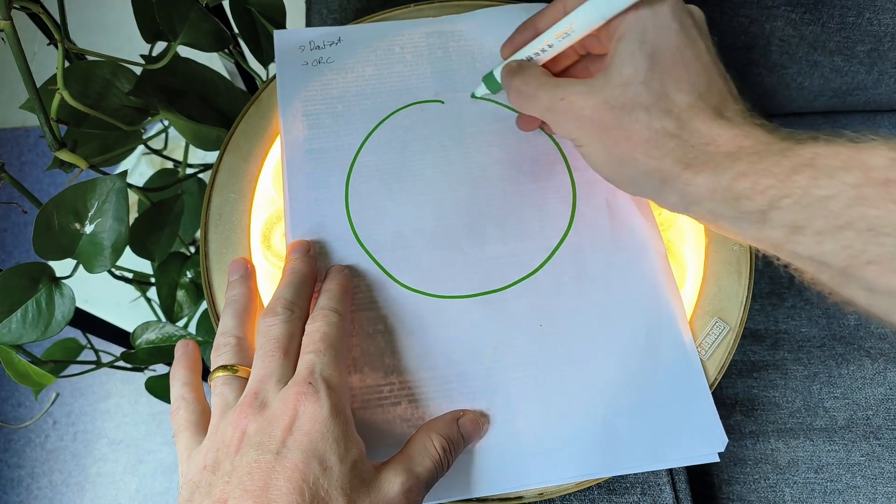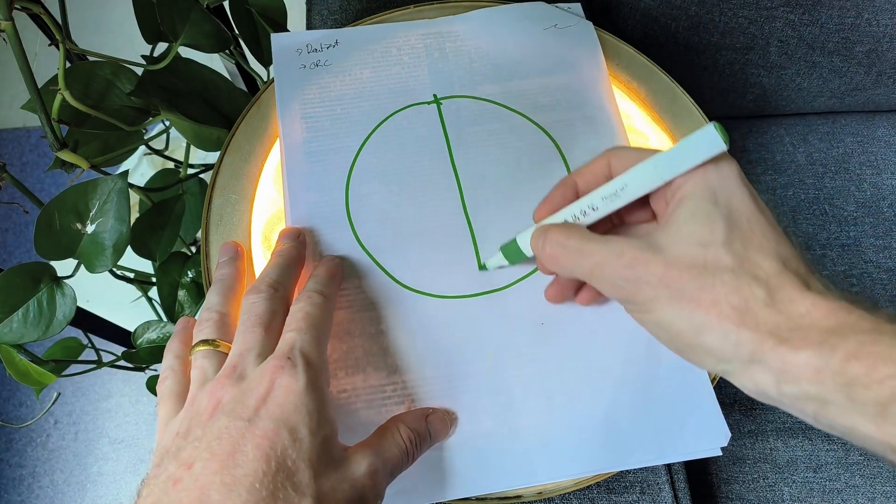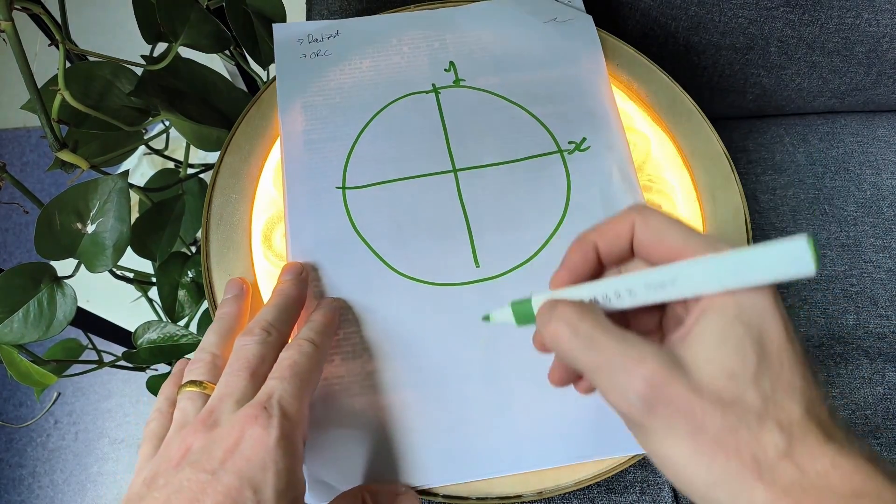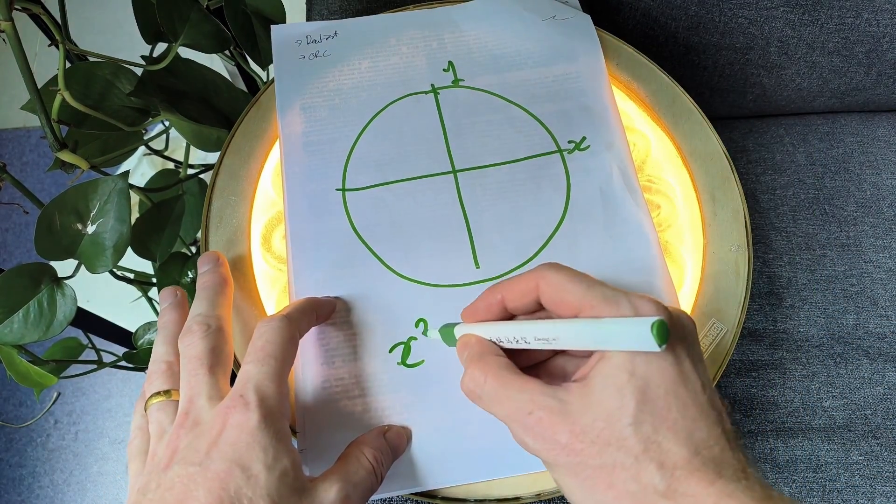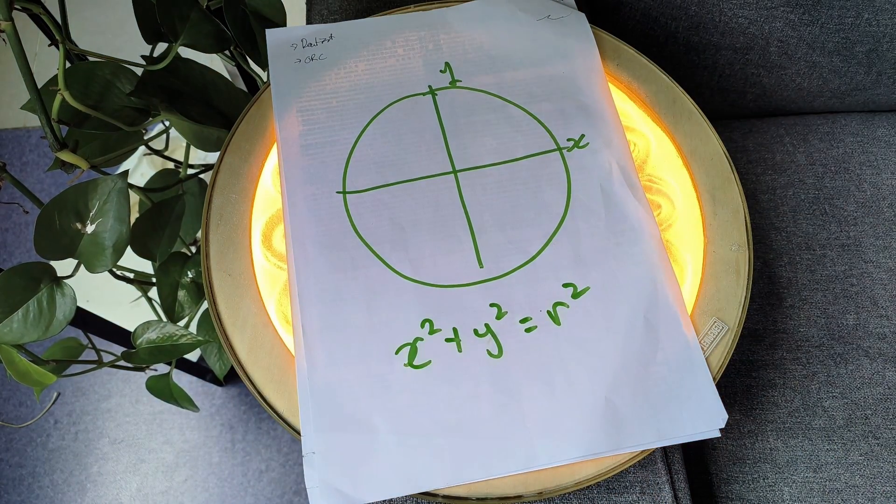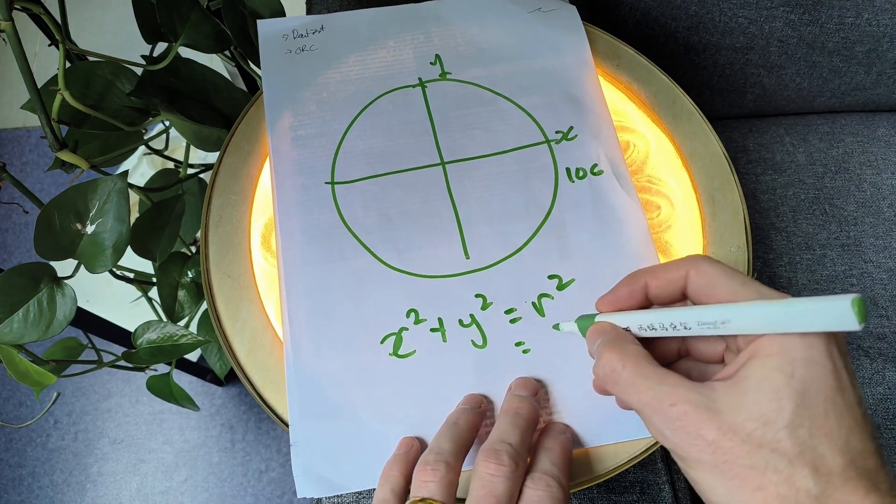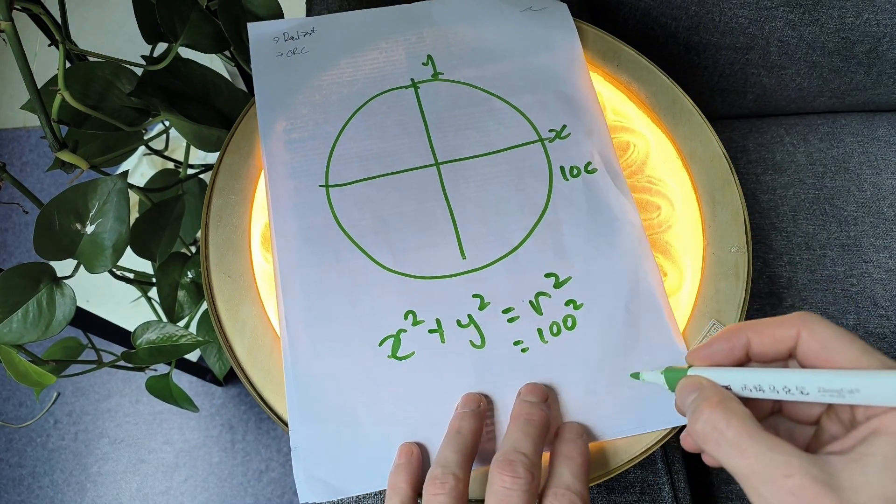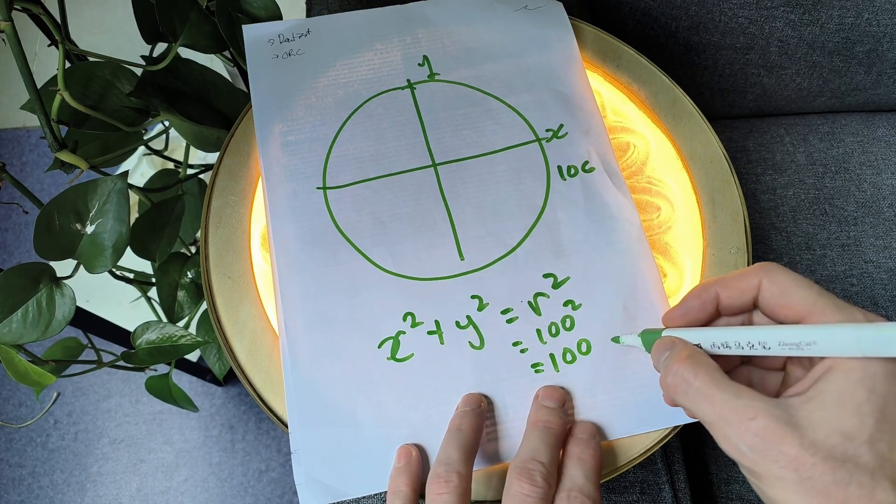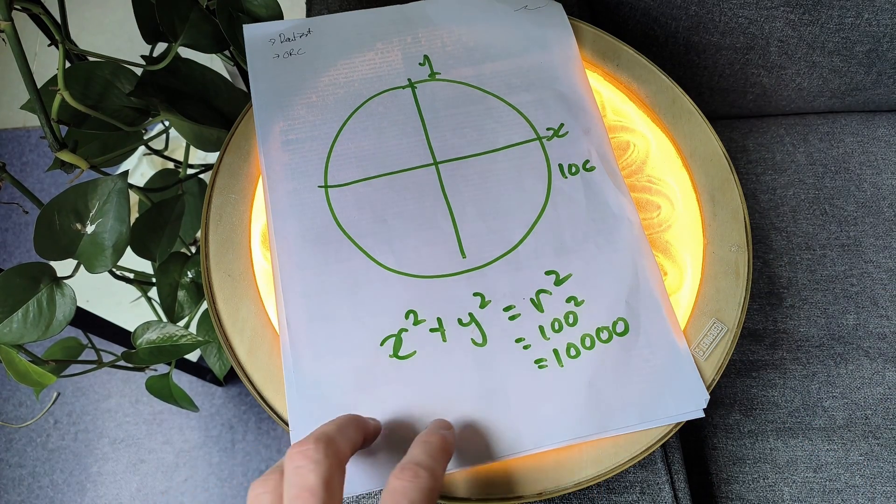Here we have a circle. If we want to find points around the circle, we have the x and y axis. The center of the origin is 0,0. The function of a circle is x squared plus y squared equals r squared. Our radius is a hundred, so we have 100 units squared, which is 10,000.